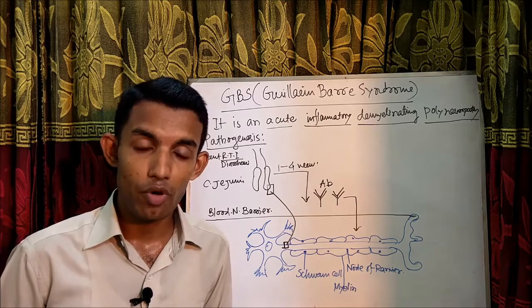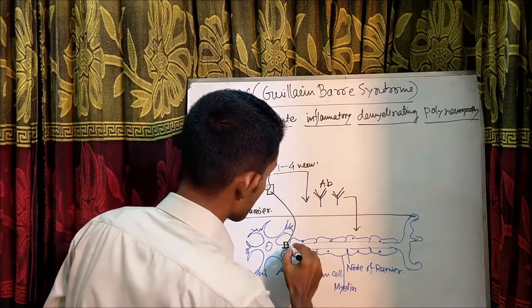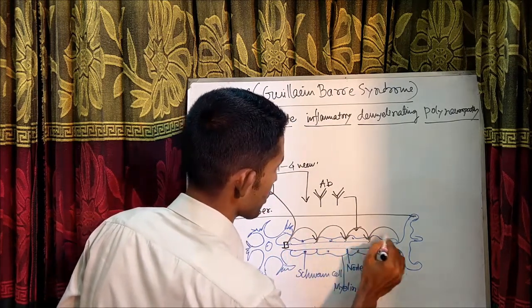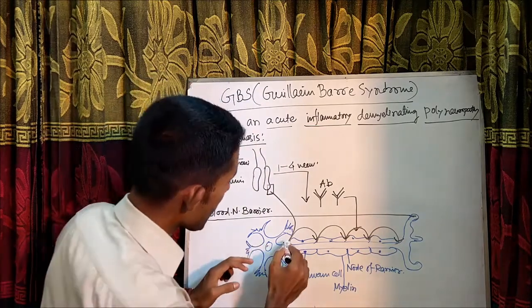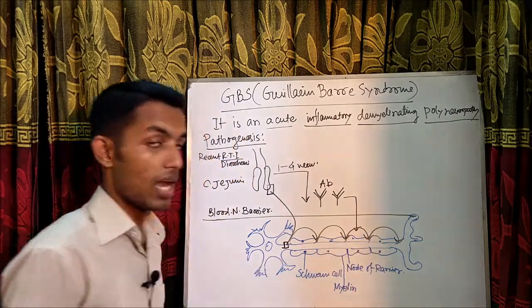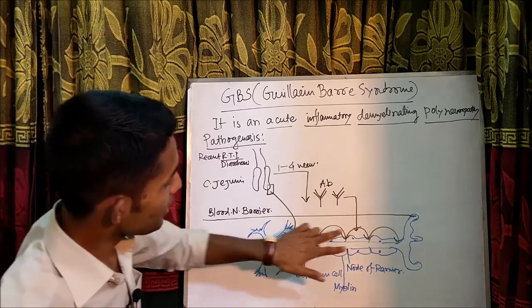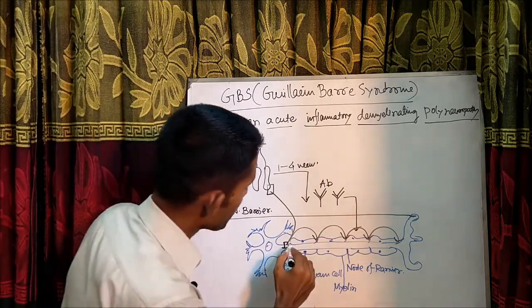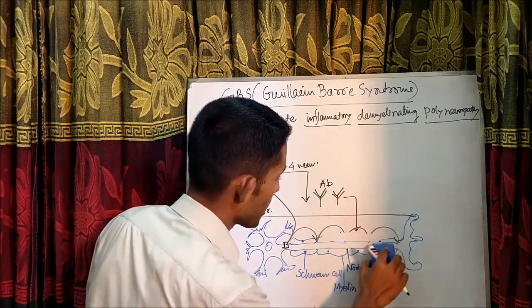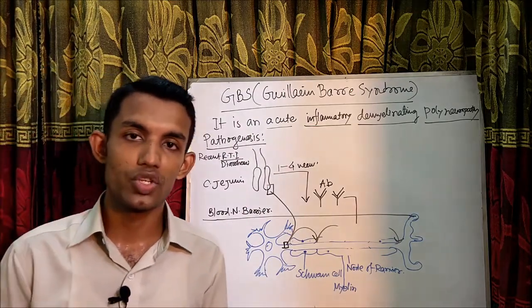Why does demyelination cause nerve conduction blockade? In normal nerves, impulse transmission occurs by saltatory conduction, meaning the action potential jumps from one node of Ranvier to another node of Ranvier — this is very rapid. Saltatory conduction is maintained by the myelin sheath. Whenever the myelin sheath is destroyed, saltatory conduction is hampered and nerve conduction is slowed.